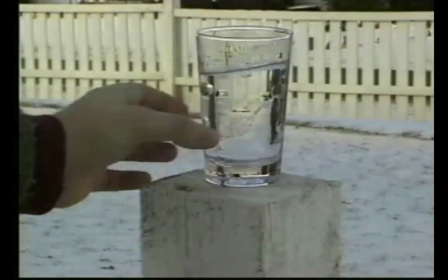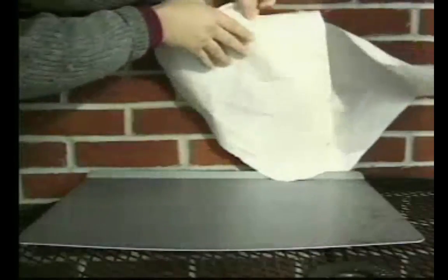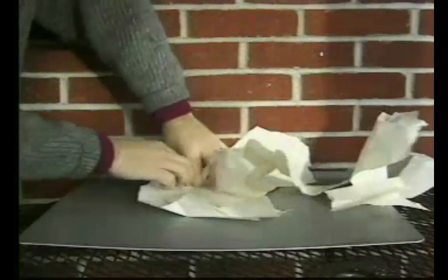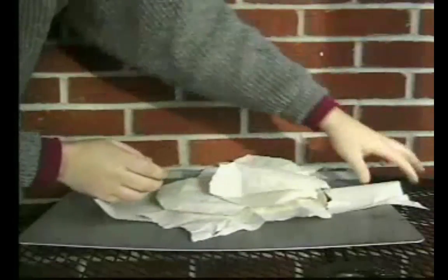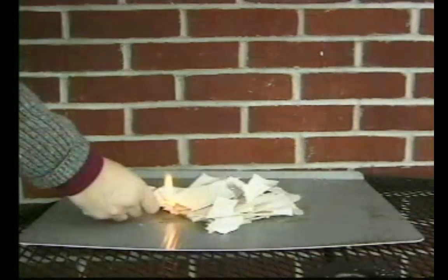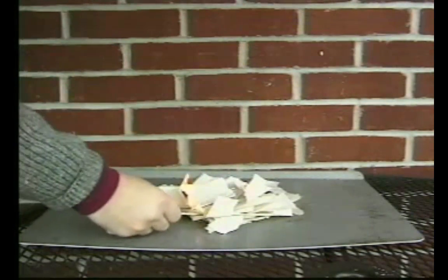In physical changes, you have the same material before and after the change. For example, with paper, we have a large piece of paper that can be torn into many small pieces — a physical change. Even though the appearance of the paper has changed, it is still paper. The chemical properties of the paper have not changed. A chemical property is the way to describe how matter reacts with other matter. The paper we have just torn up, for example, can burn easily if we light it with a match. The ability to burn is described by the chemical property called flammability.